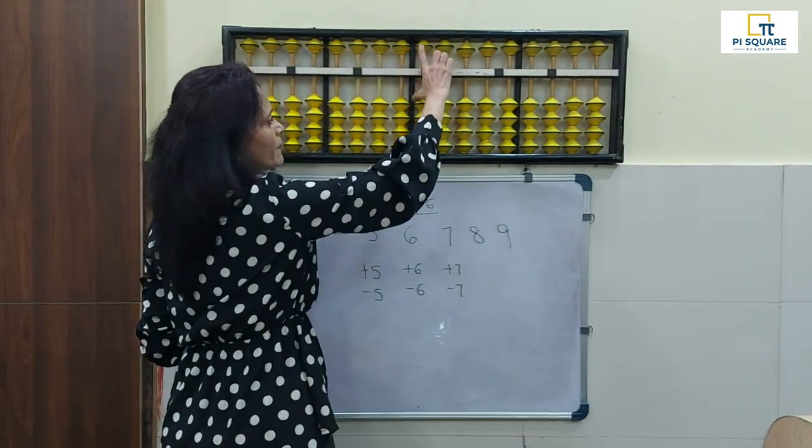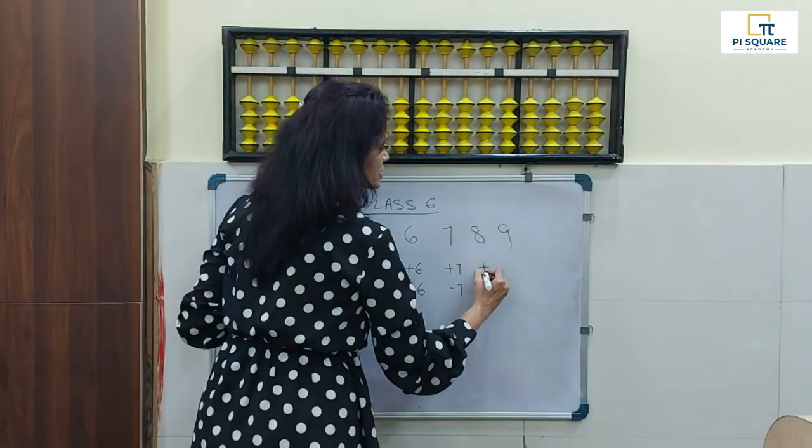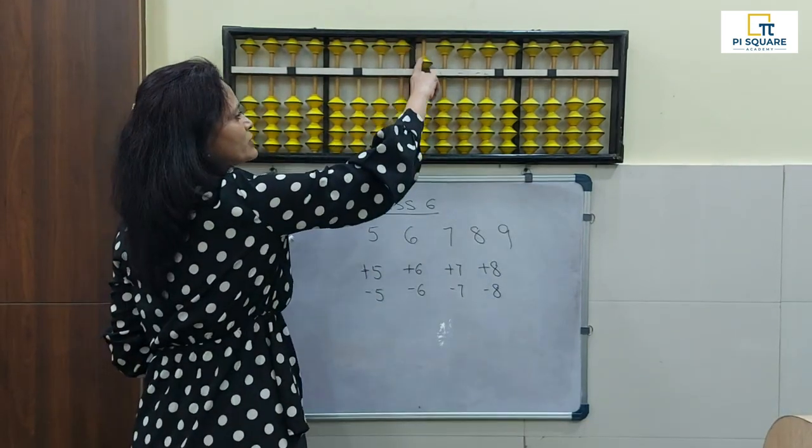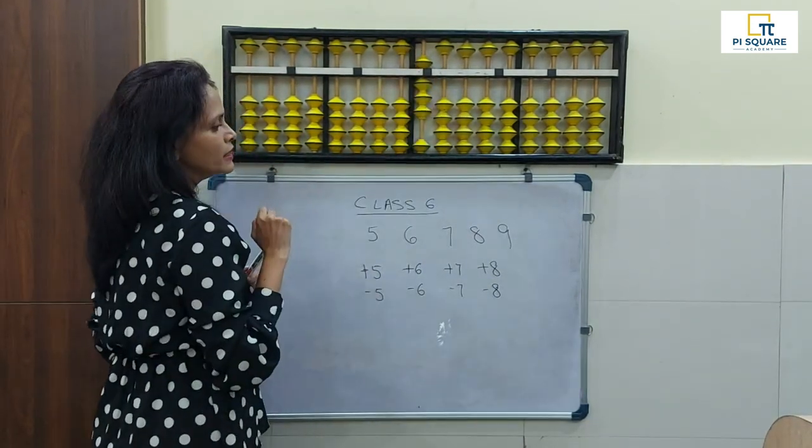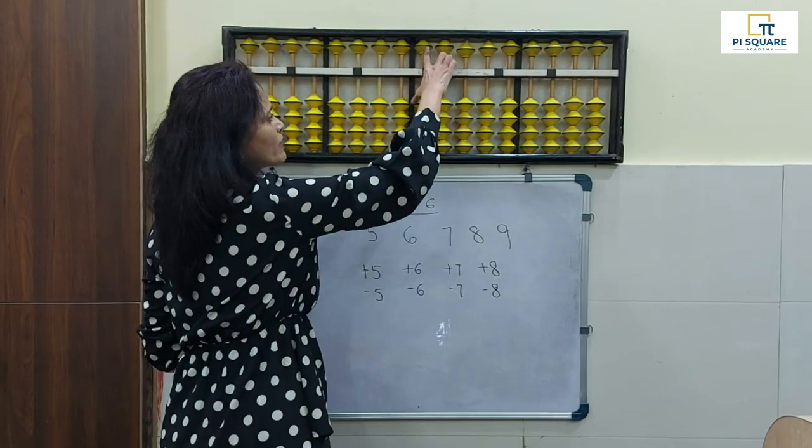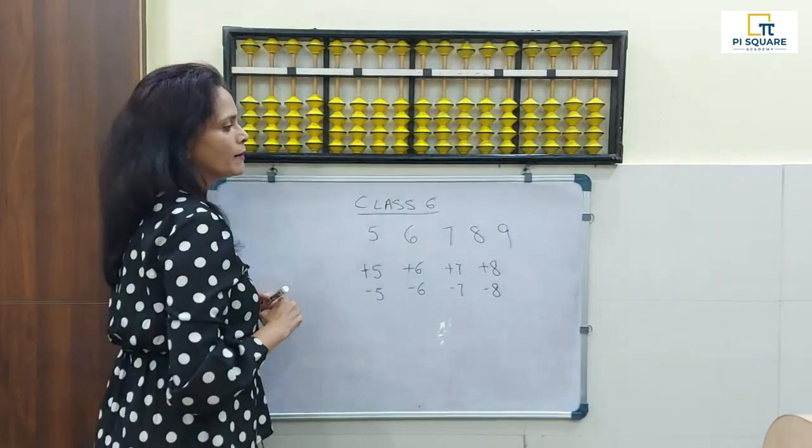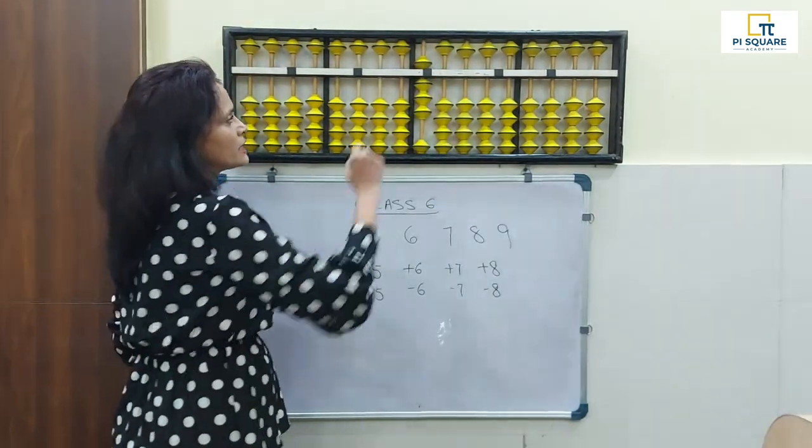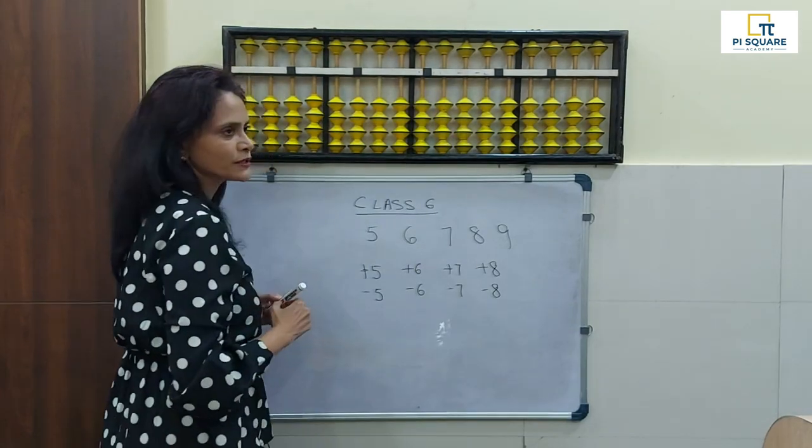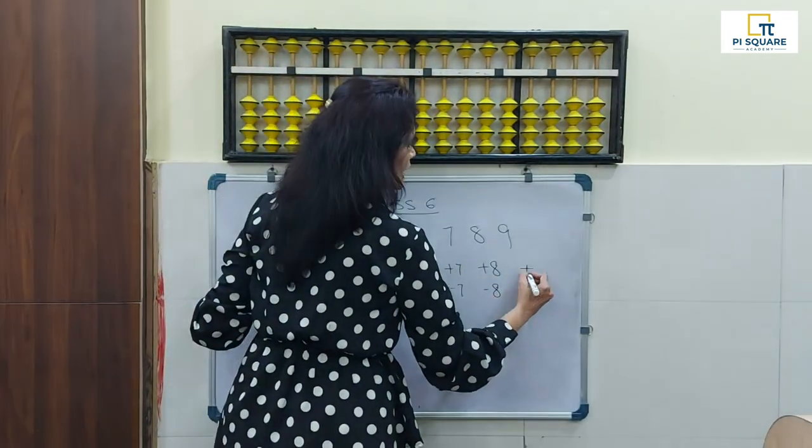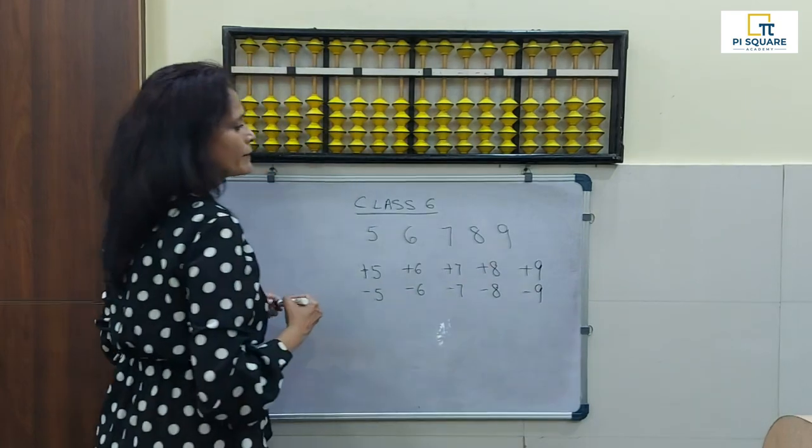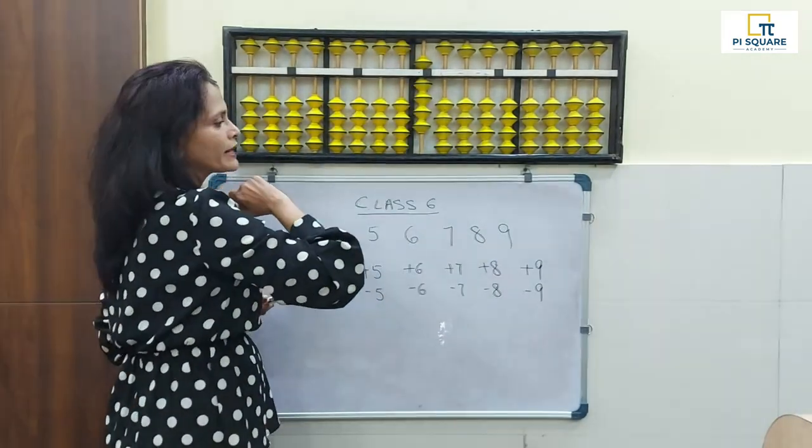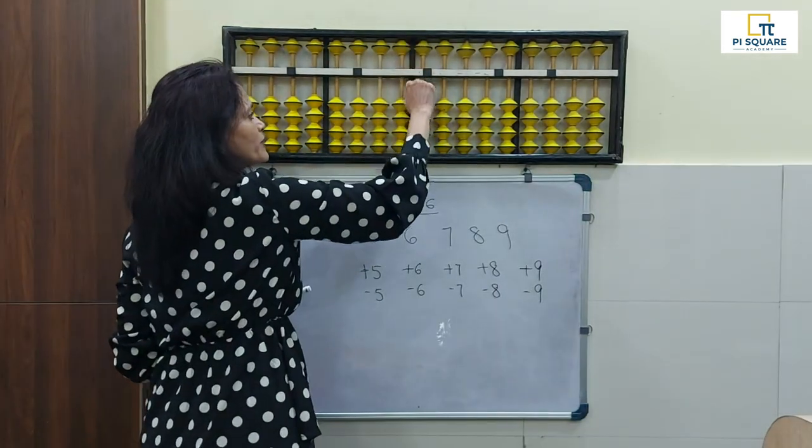Next is plus 8 and minus 8. Plus 8: 5 and 3 come together. Minus 8: 5 and 3 go away from each other. Plus 9 and minus 9—these are the easiest ones. The 9 is the easiest one. 5 and all 4 beads join together. Minus 9: 5 and all 4 beads go away from each other.